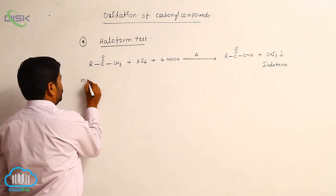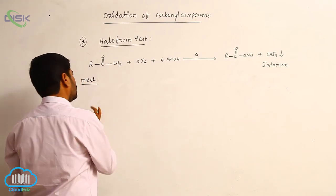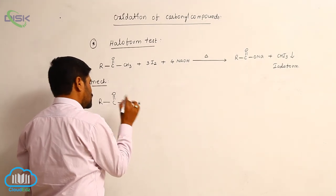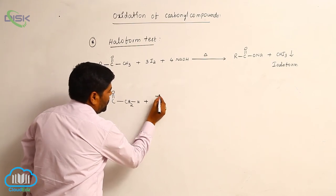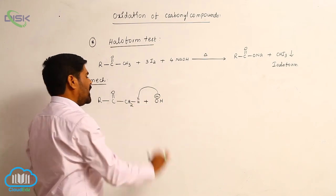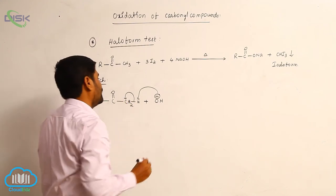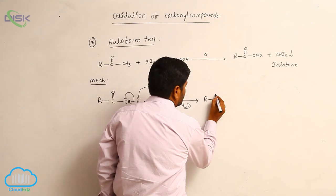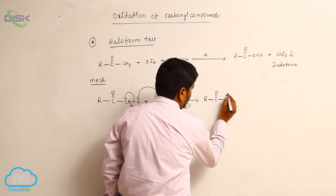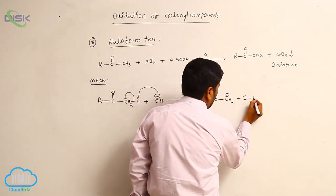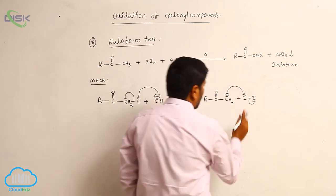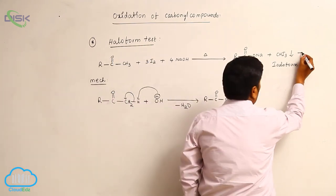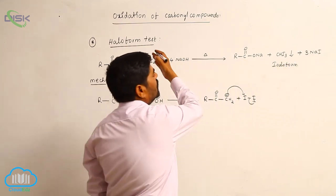Regarding the mechanism: starting with R-CO-CH₂, a base abstracts a proton from the alpha carbon. Loss of water takes place, forming a carbanion R-CO-CH₂⁻. This reacts with an iodine molecule; I⁻ is lost as sodium iodide. Three moles of sodium iodide are lost in total. This is the complete balanced equation.